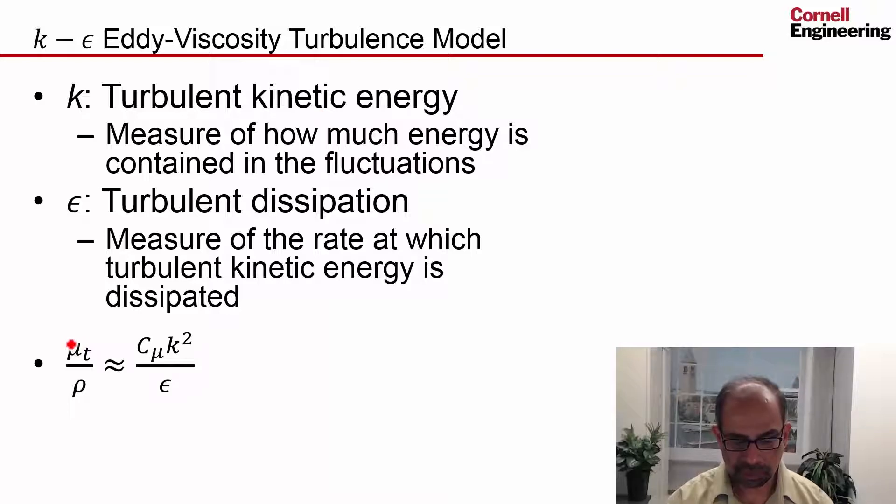The eddy viscosity, mu_t, is calculated from k and epsilon in this fashion, and this is an approximate relationship. This is all modeling. It's guesswork based on experimental observations and physical arguments. If k is higher, there's more turbulent fluctuations, and the eddy viscosity is higher. If epsilon is higher, the fluctuations are being killed at a higher rate, and so the eddy viscosity is lower.